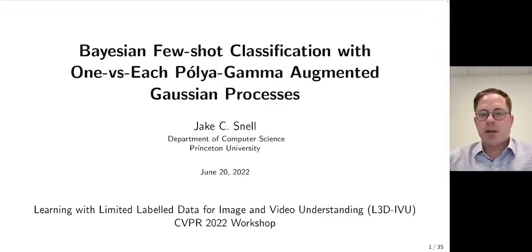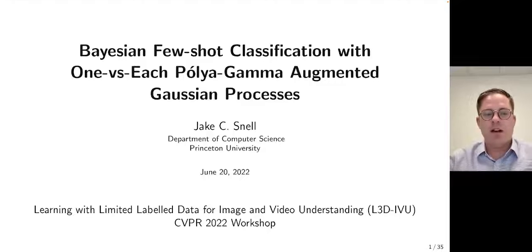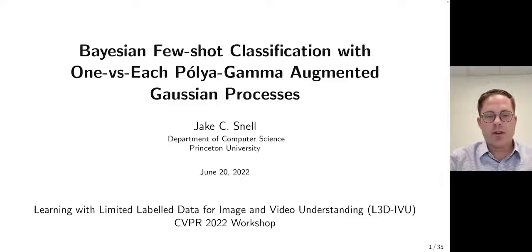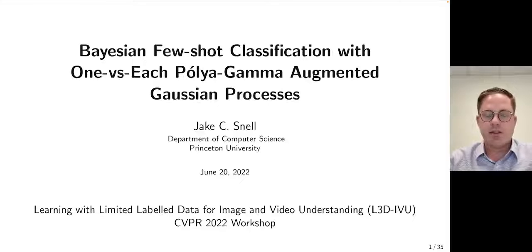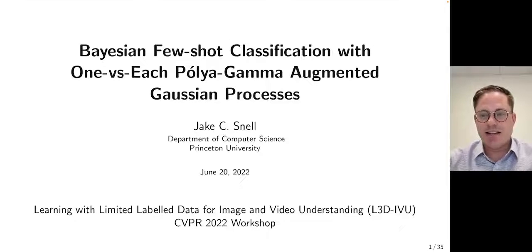Today I'll be talking about Bayesian few-shot classification with one-versus-each polygamma augmented Gaussian processes. This talk is based on joint work with Professor Richard Zemel that we presented at ICLR last year, with some additional perspective added in that we've gained since then.